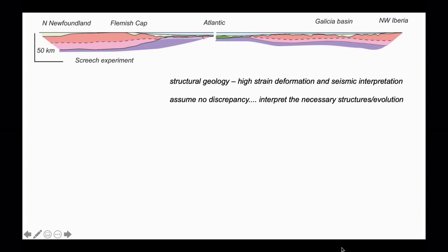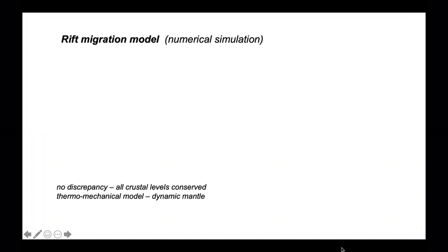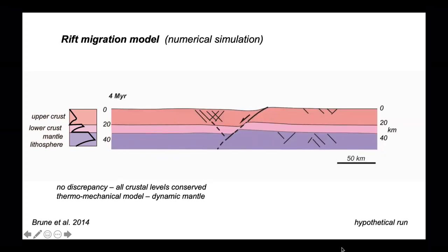This illustrates part of the problem of doing structural geology when the strain is high and being reliant entirely on seismic reflection profiles. An alternative is to perhaps assume that there's no discrepancy and interpret the necessary structures and the structural evolution to achieve the geometries that are resolvable. This takes us to another strategy: numerical simulation. In this, we'll assume there's no discrepancy in stretching when considered across the entire margin pair. All crustal levels are conserved. However, we need not assume such conservation for the lithospheric mantle, because the distinction between the mantle in the lithosphere and the asthenosphere is rheological and therefore can change as the deformation progresses. This behavior can be explored through a thermomechanical model. For this, we'll assume a strength depth profile down through a layered lithosphere of upper crust, lower crust and the mantle component. This approach was adopted by Saskia Bruno and others. Here are their results.